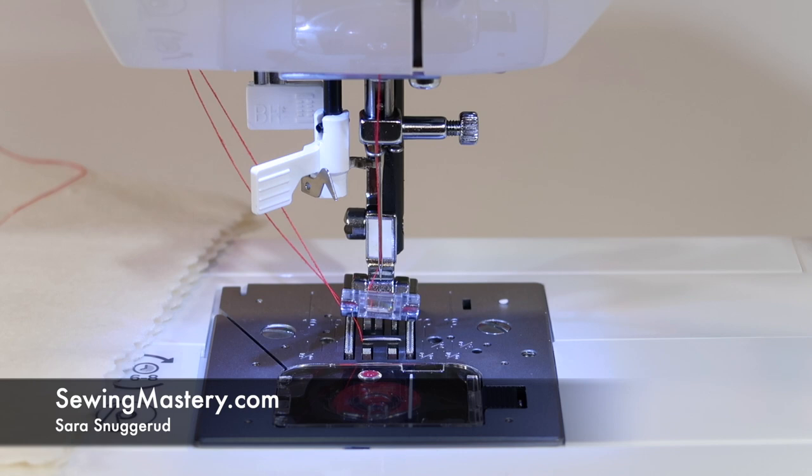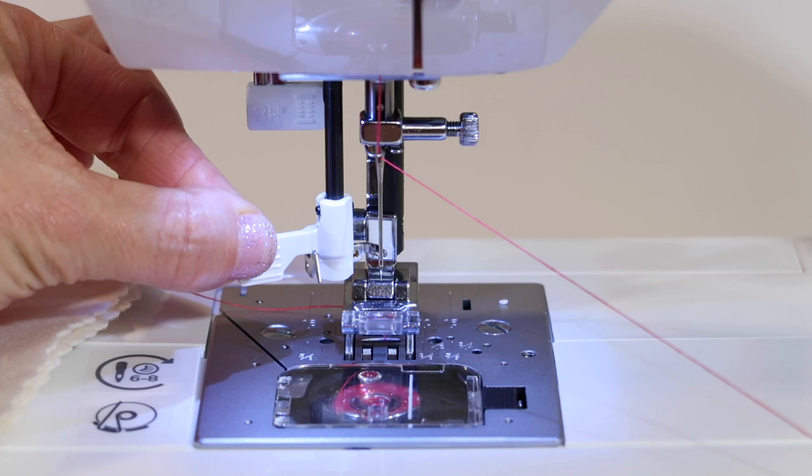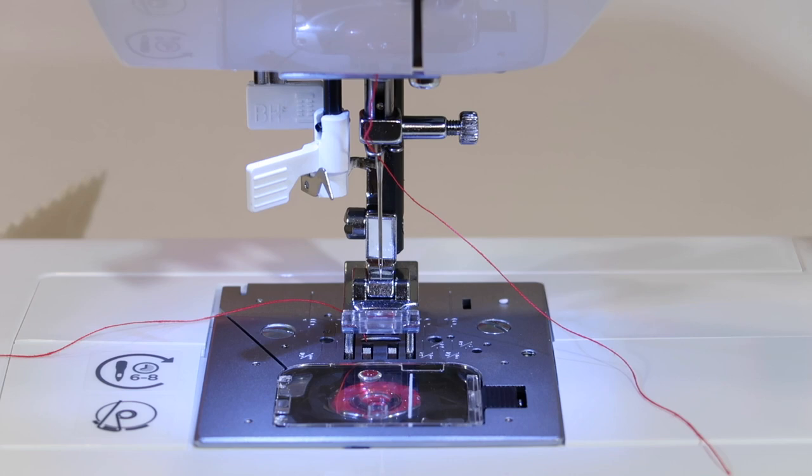I want to help you master your needle threader on your Singer Confidence Quilter sewing machine. It is a small unit that when you pull it down and pivot it all the way around, there is a very small hook, a piece of metal that's going to take the thread and pull it from the front all the way to the back side.